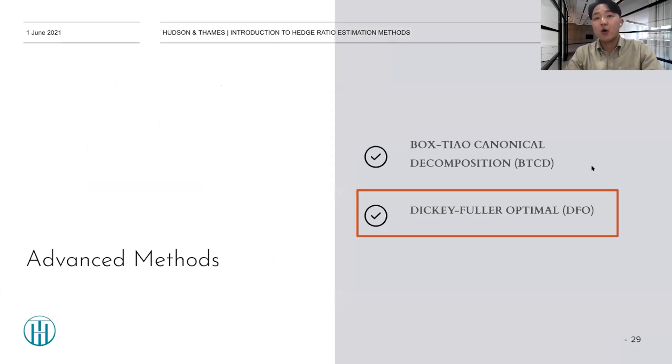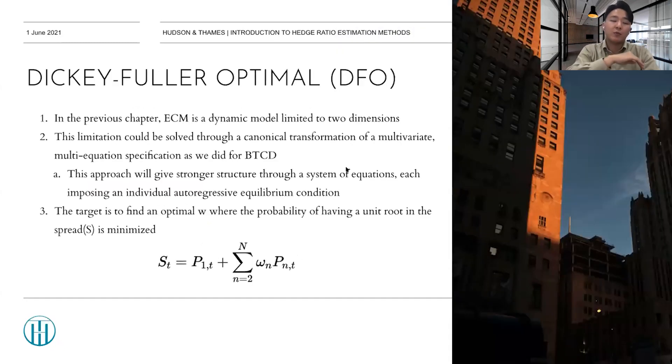So the next is DFO. In the previous chapter in the multi-period method, the ECM is a dynamic model limited to two dimensions. And I already mentioned about the extensions in the advanced method. And this is the one, DFO. This limitation of ECM could be solved through a canonical transformation of a multivariate multi-equation specification as we did for BTCD. This approach will give stronger structure through a series of equations and each imposing an individual autoregressive equilibrium condition. So the target is to find an optimal W where the probability of having a unit root in the spread S here is minimized. So this is an extension version of ECM.